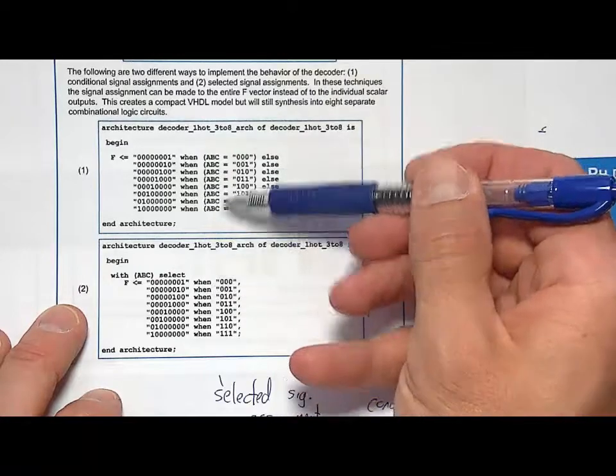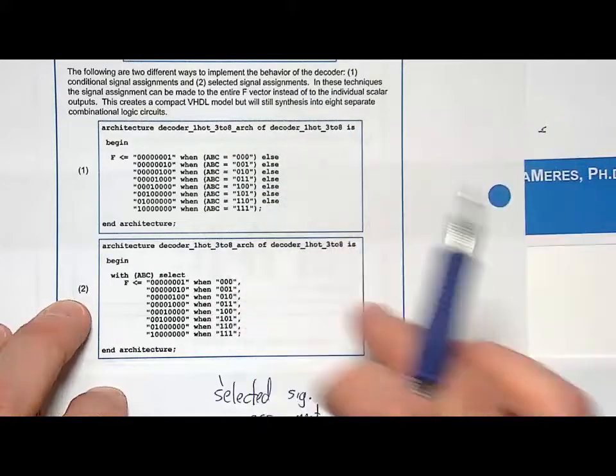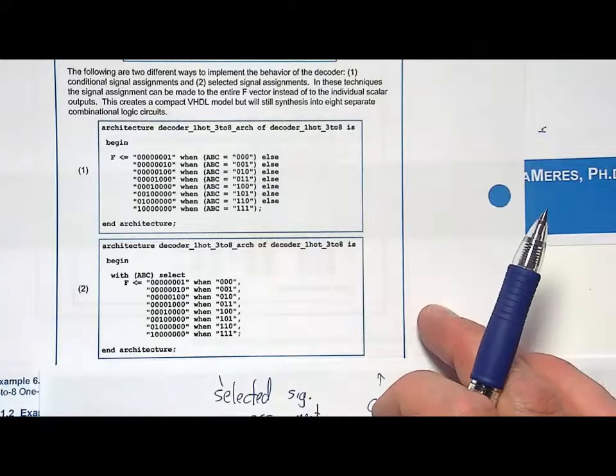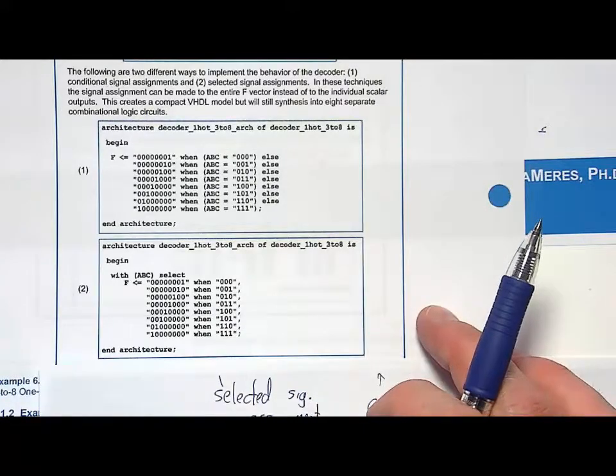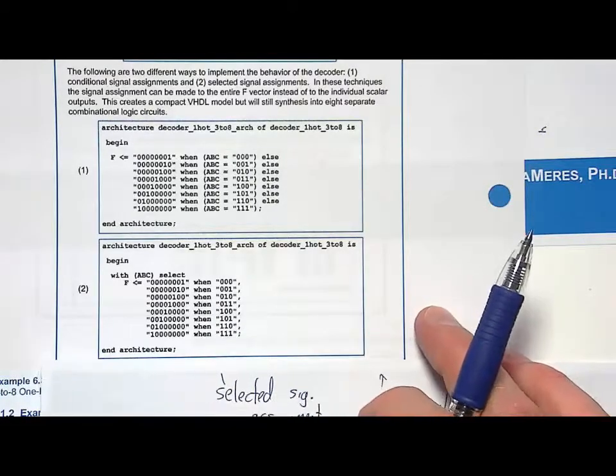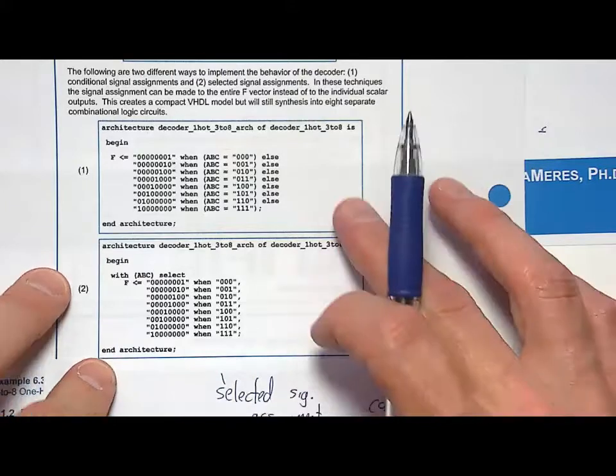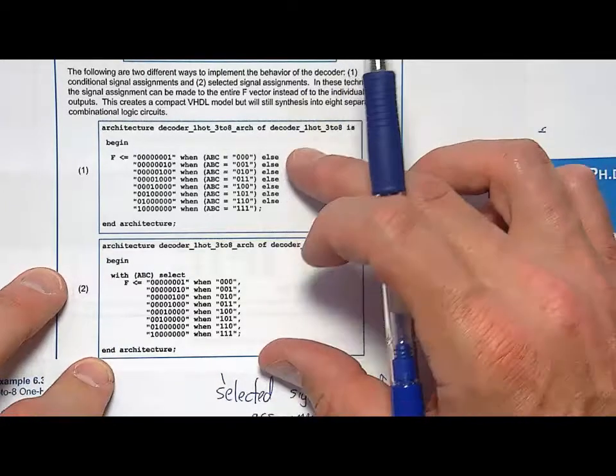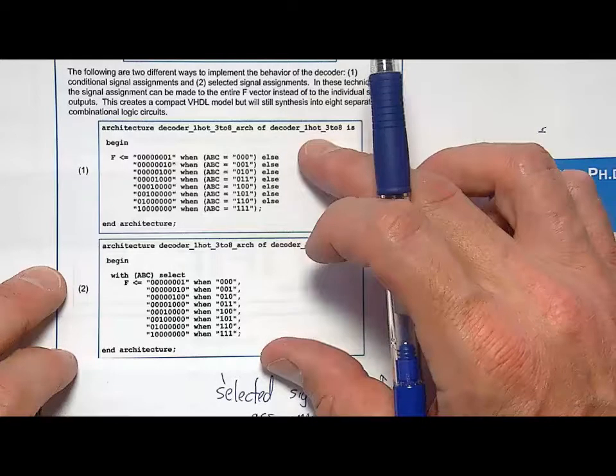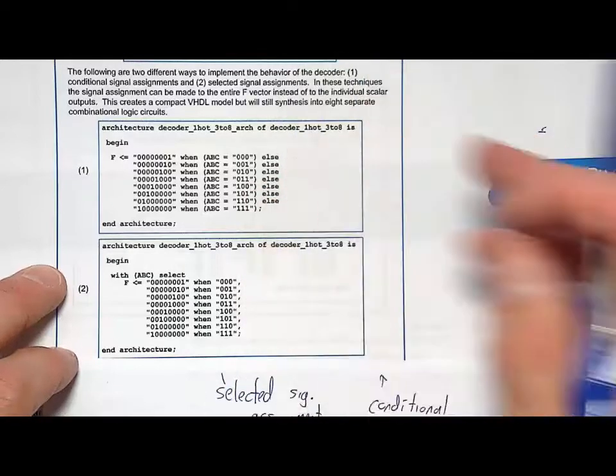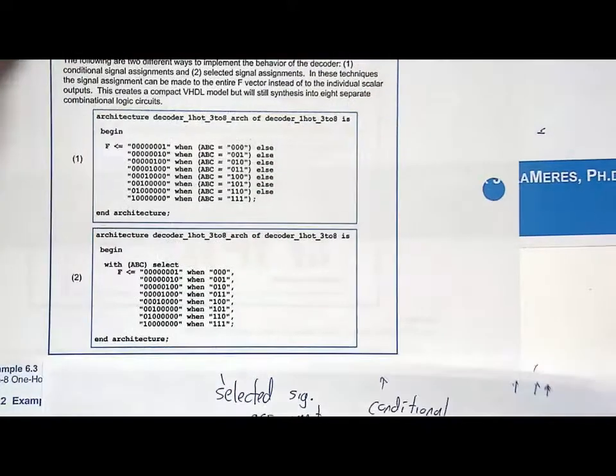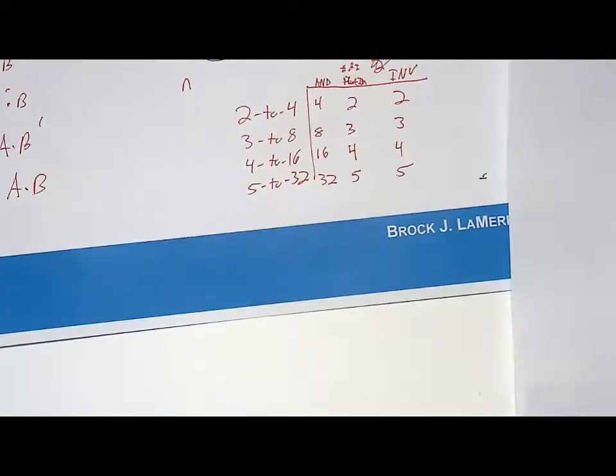So these two are identical behavior. One is a conditional signal assignment, one is a selected signal assignment. But you can start to see how you can model very larger and larger systems using VHDL, all the while understanding that beneath the synthesizer it's actually implementing this using the classical digital design approach. It's just that you're going to let the automated CAD tool do that for you.